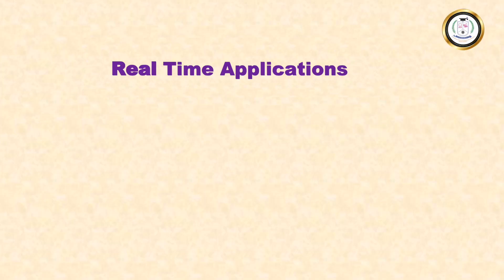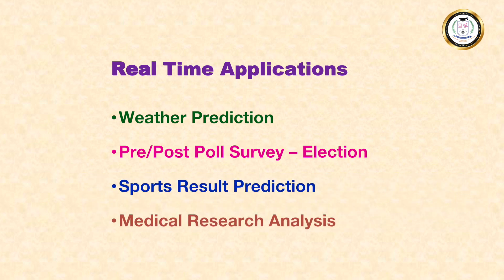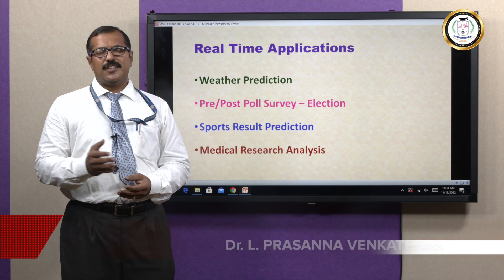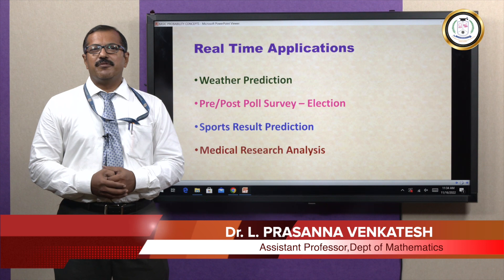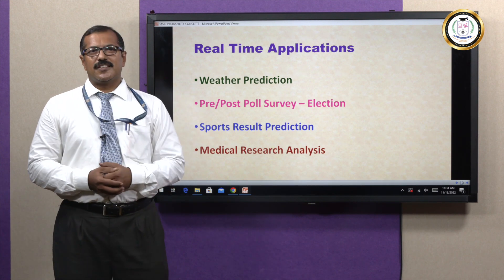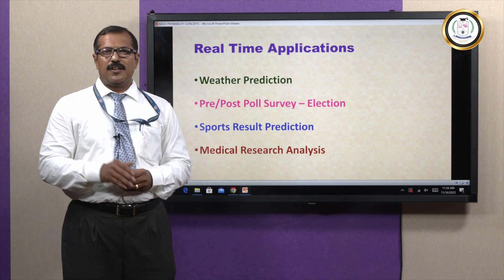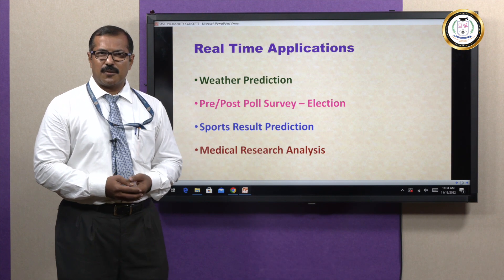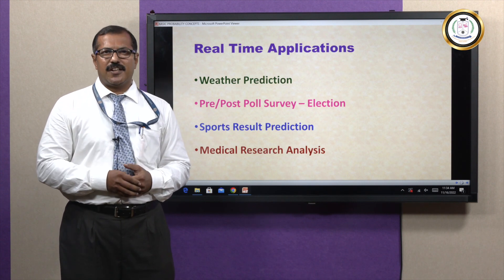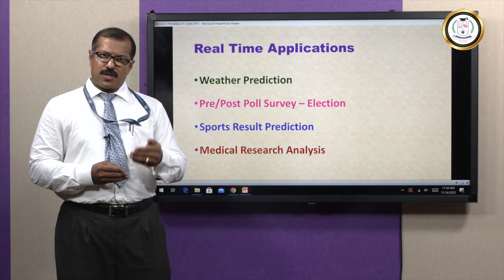The real-time applications of this topic are in weather prediction, pre and post survey of elections, in sports result prediction, and in medical research analysis. While predicting weather, what is the chance of rain today — 70% chance, 60% chance — all these things are the concept of probability. Any result given in terms of percentage is probability. In sports, they will give information like there is a 60% chance for this team to win, 40% chance for the other team. And in medical research analysis, there is a certain percentage of chance that if a medicine is taken, the disease will get cured.